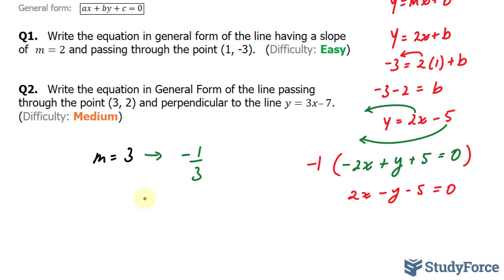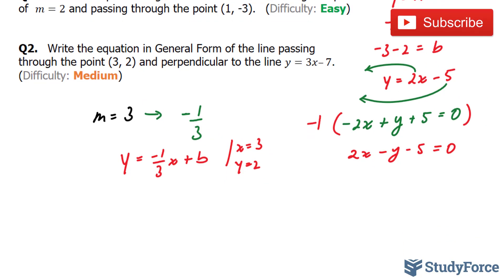That being said, we'll start off with the same technique as before: y equals mx plus b, where my m is negative 1 over 3, x plus b. I'll substitute the only point that they give us, x equals 3 and y equals 2, this point. Let's see what happens.